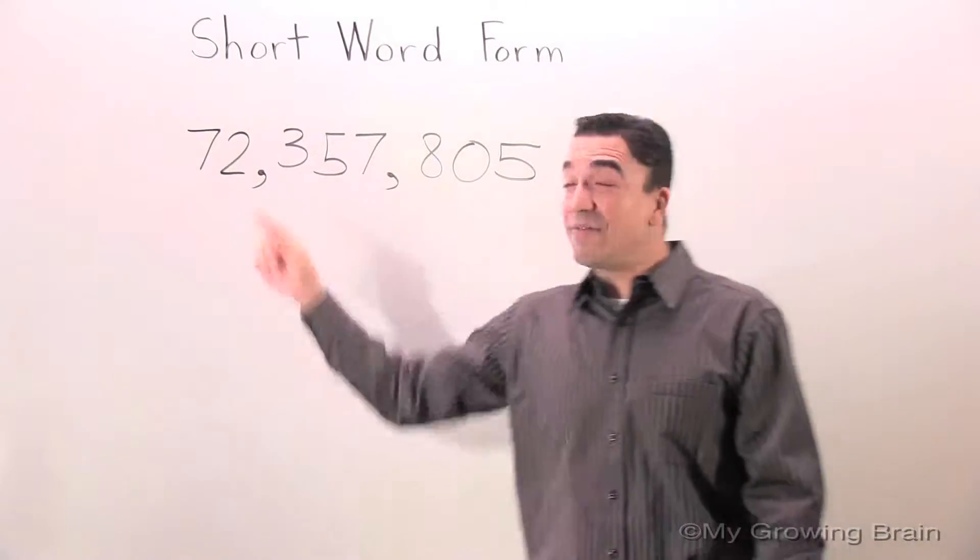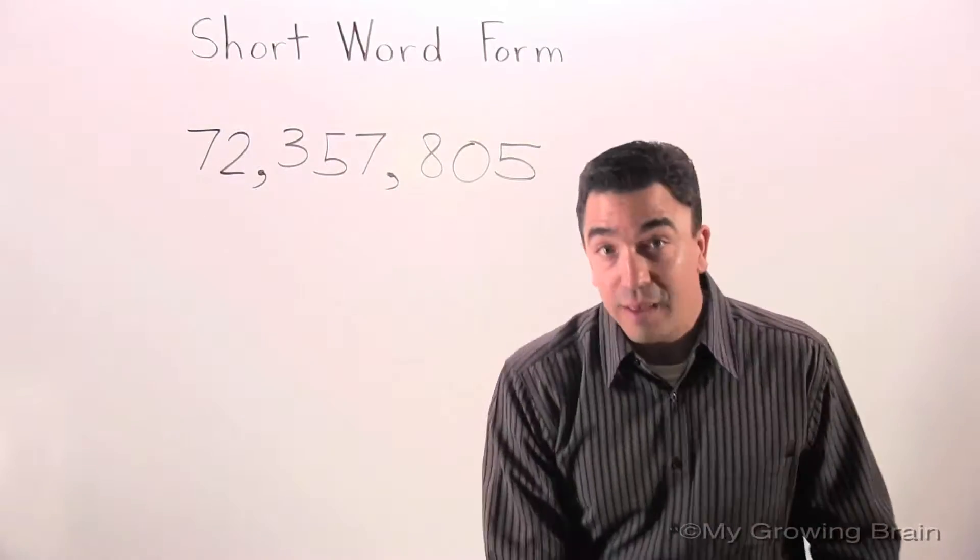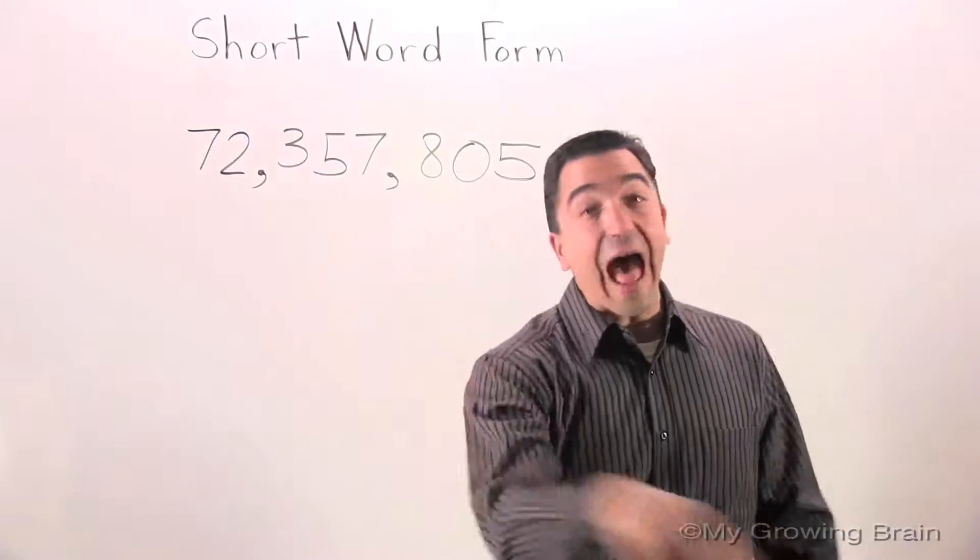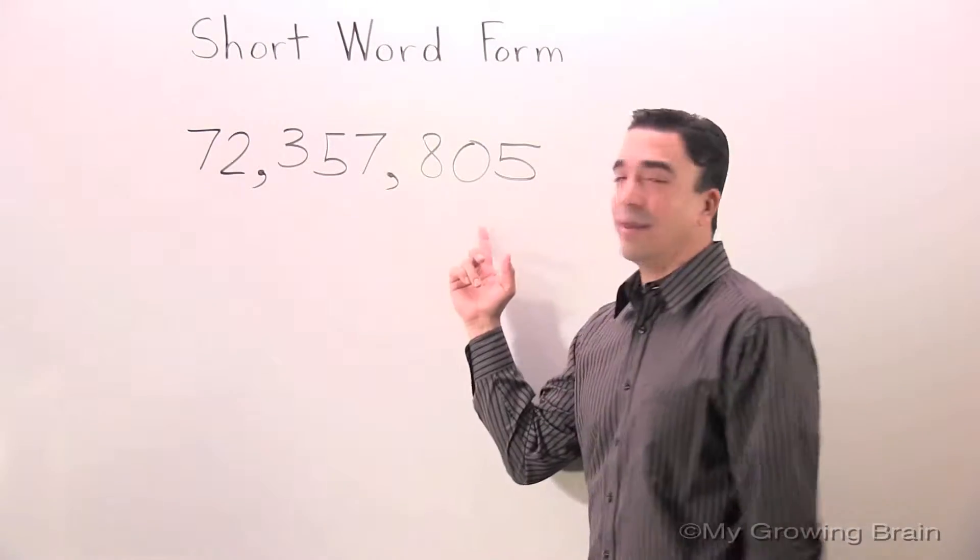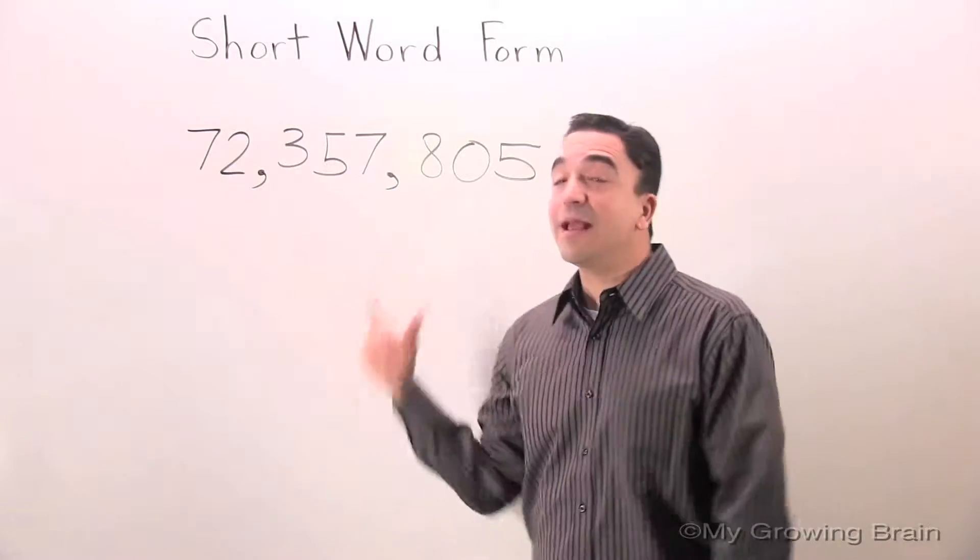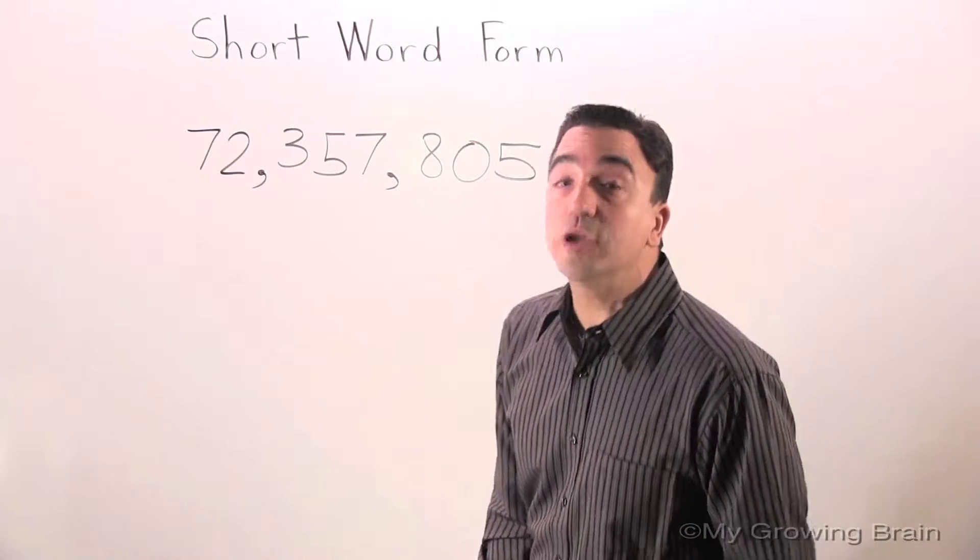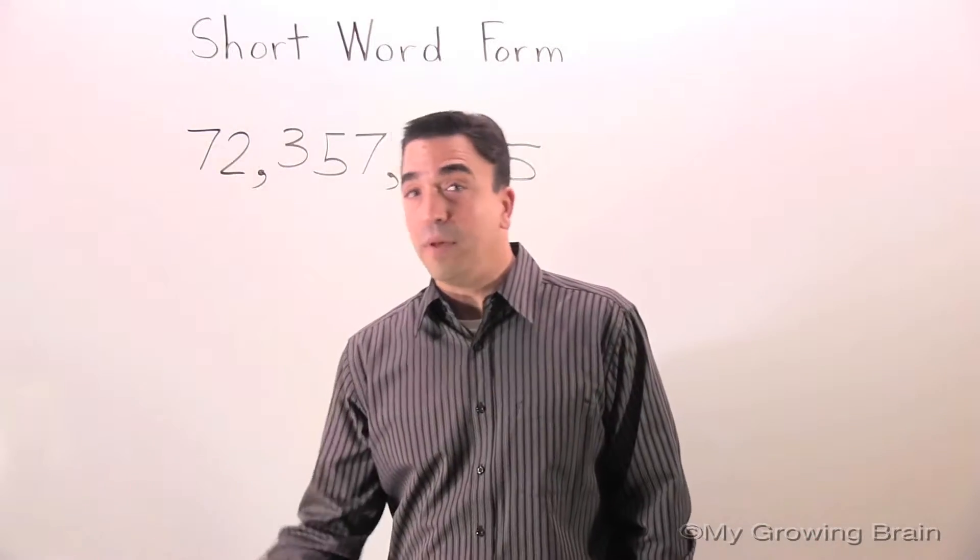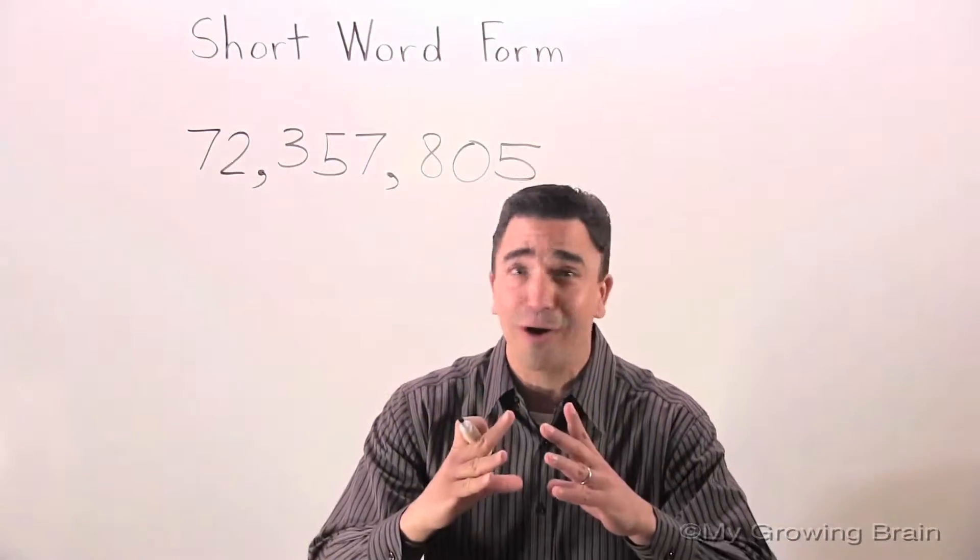Here's our number: 72,357,805. We're going to take this number and put it into short word form. Now, short word form is different from word form because it's shorter.